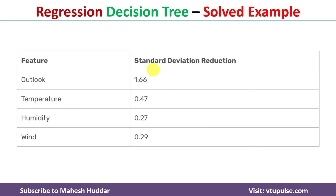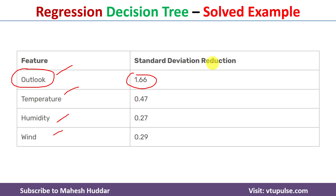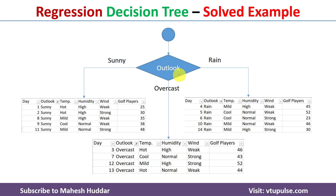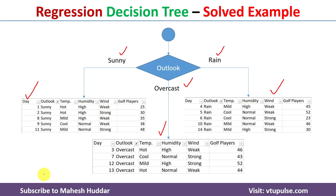We now compare the standard deviation reductions for all four attributes. Outlook has the maximum SDR of 1.66, so Outlook is selected as the root node. Since Outlook has three possibilities — sunny, overcast, and rain — we create three branches. The sunny branch has five examples, overcast has four examples, and rain has five examples.